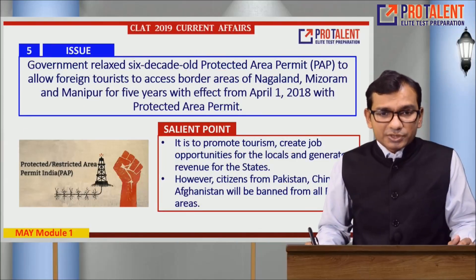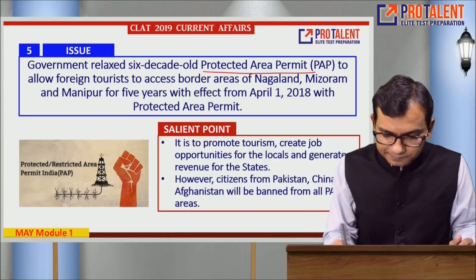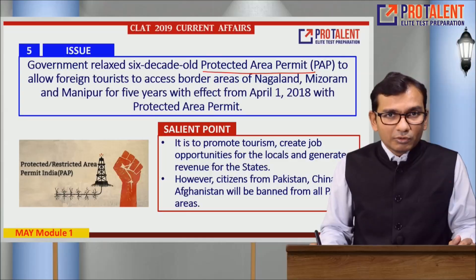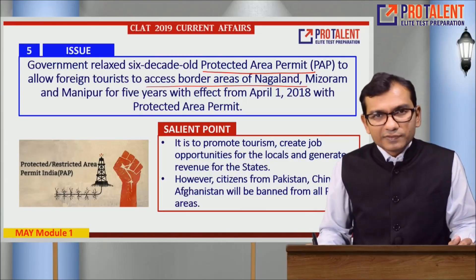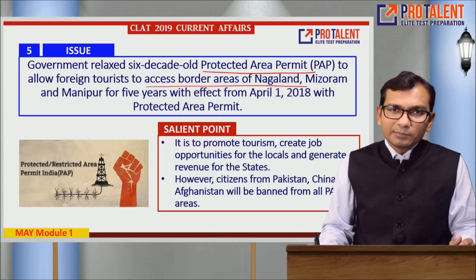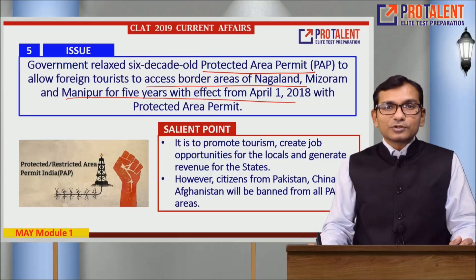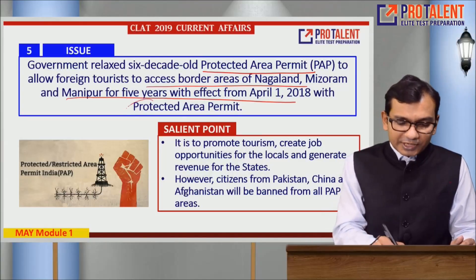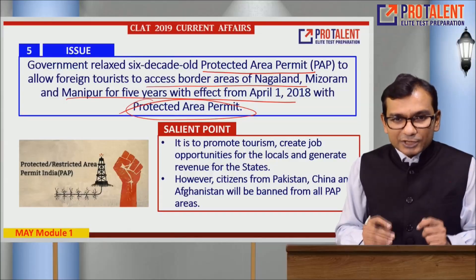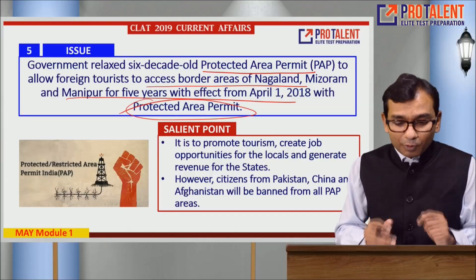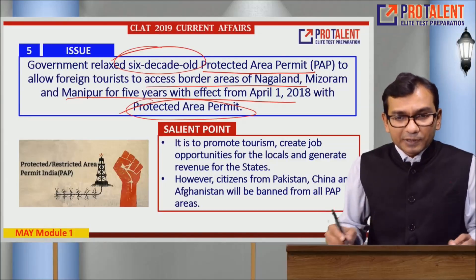Point five: the government relaxed the six-decade-old Protected Area Permit (PAP) to allow foreign tourists to access border areas of Nagaland, Mizoram, and Manipur for five years, with effect from April 1, 2018. This is primarily intended to promote tourism and create job opportunities. The six-decade-old Protected Area Permit has been relaxed.